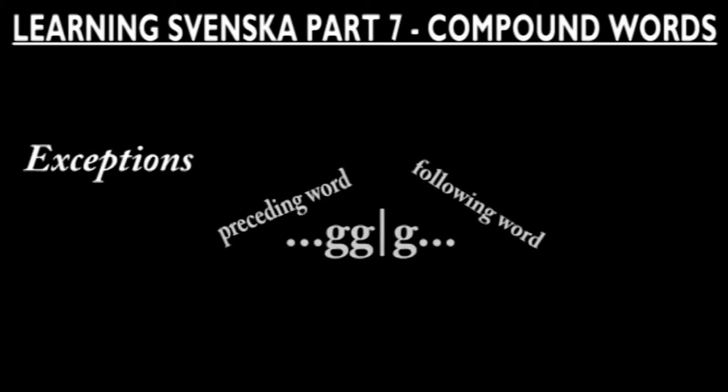Okay, fine. Hopefully that wasn't too confusing, so let's mention some exceptions. If the first word ends with two identical consonants and the second word starts with the same consonant, this does not create a triple consonant. Enough is enough.